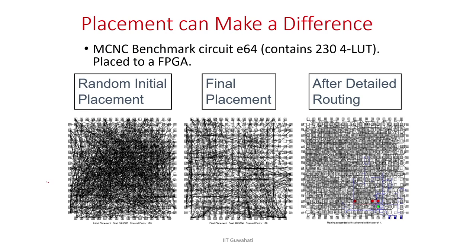A very bad placement creates a lot of wire, while a good placement results in far fewer wires. After placement, exact connections are made — these connections do not go over the blocks but go between the blocks. The space between blocks is used for routing.